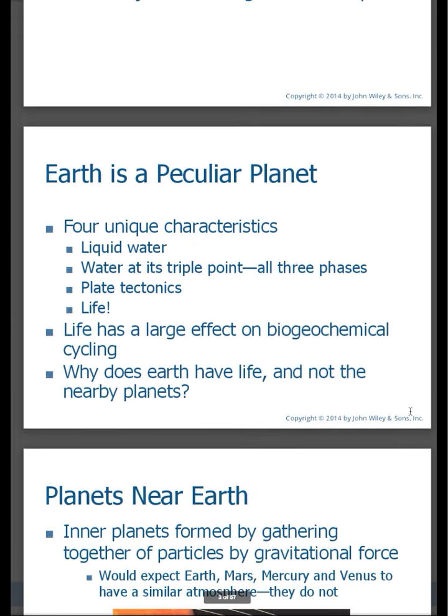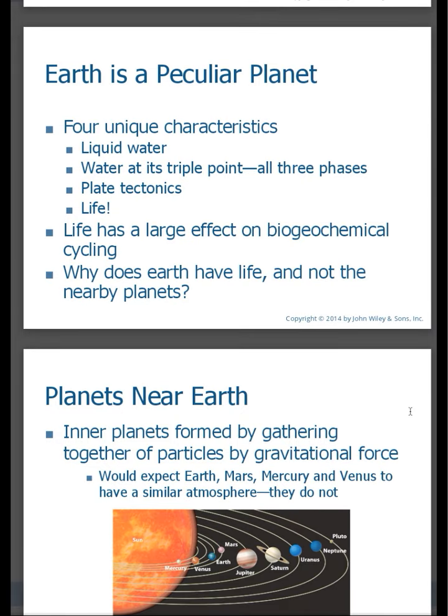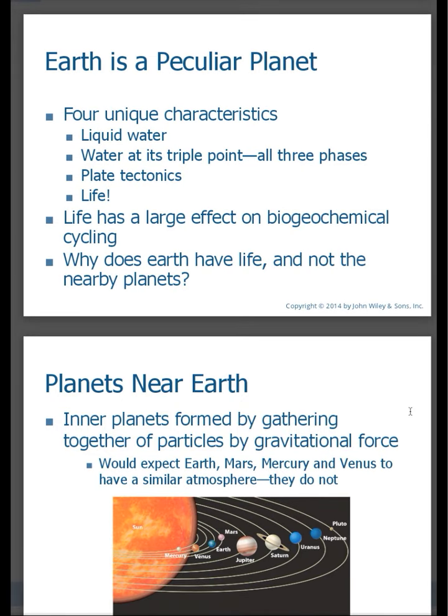So why do I say earth is a peculiar planet? Well part of it has to do with its four unique characteristics. As far as we know earth is the only planet in our solar system that has water, and not only liquid water but water at its triple point. In other words water can exist in all three phases: solid, liquid, and gas.